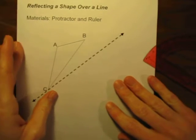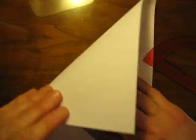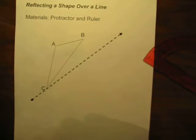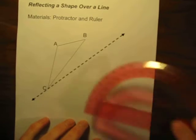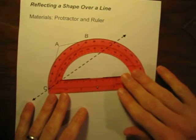We could think of this in terms of folding paper, we could fold paper over and do lots of different methods, but it's important to know how to actually use a protractor and to use the ruler.